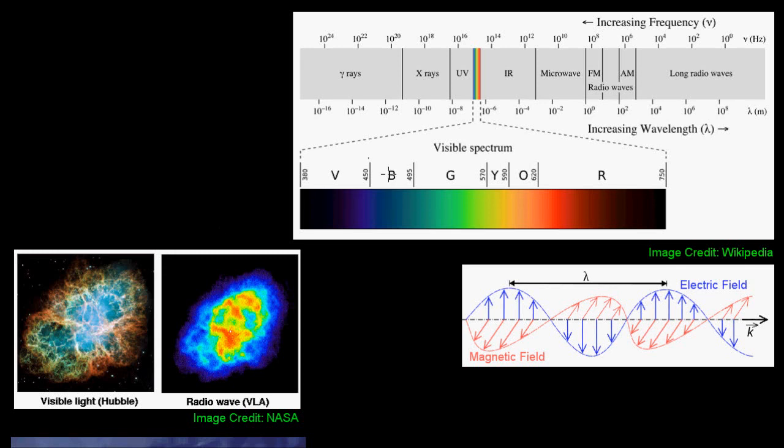However, pulsars don't give off much visible light at all. The pulsar signals that are given off are mostly in the form of radio waves, which are invisible to the human eye. Observing these different frequencies of light require different kinds of telescopes, and in this video we'll look at the radio telescopes that are used by NANOGrav. Let's start by looking at the different parts of the electromagnetic spectrum.